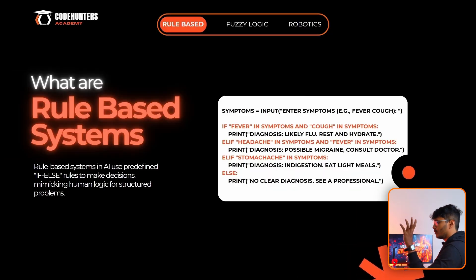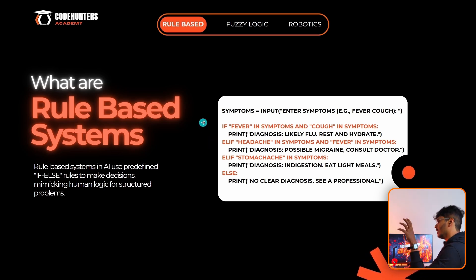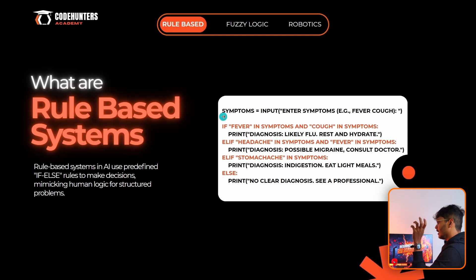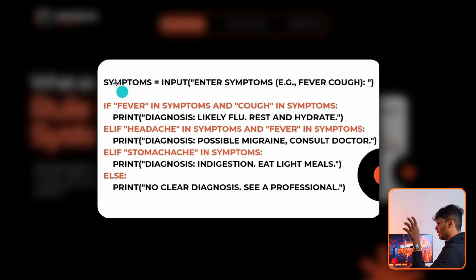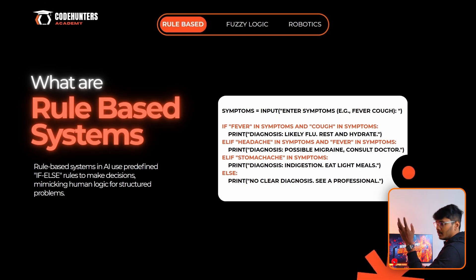Rule-based systems use simple IF-ELSE blocks in a program. When you use IF-ELSE, you code: do this, do this, do this. For example, a medical diagnosis: if you have a fever and cough, the diagnosis is flu. If you have a headache and fever, it's a possible migraine and you should consult a doctor. If you have a stomachache, you can eat a light meal. This is a simple IF-ELSE condition — this is a rule-based system.